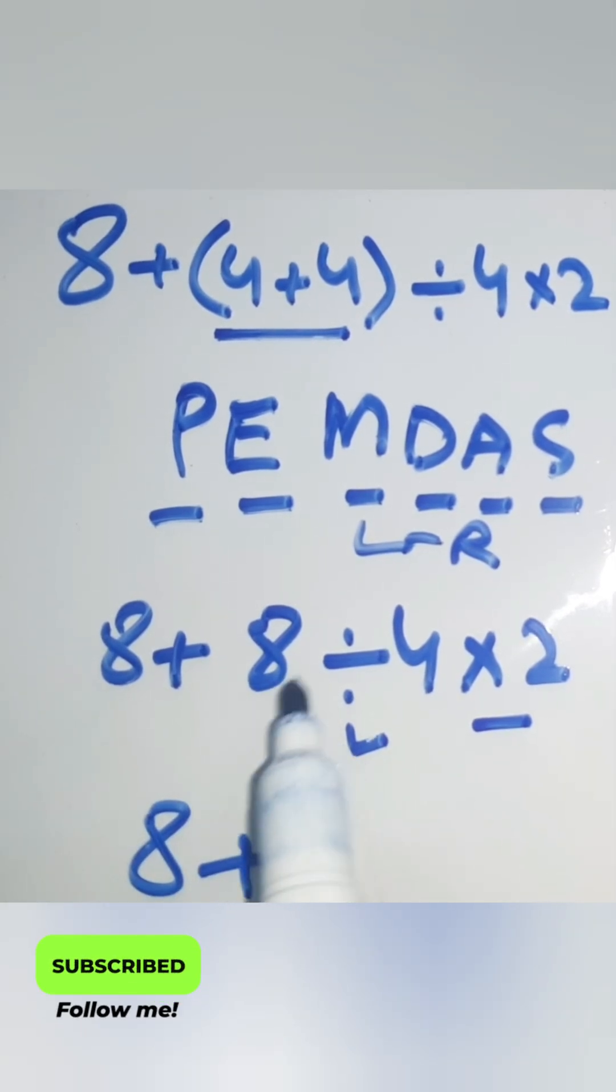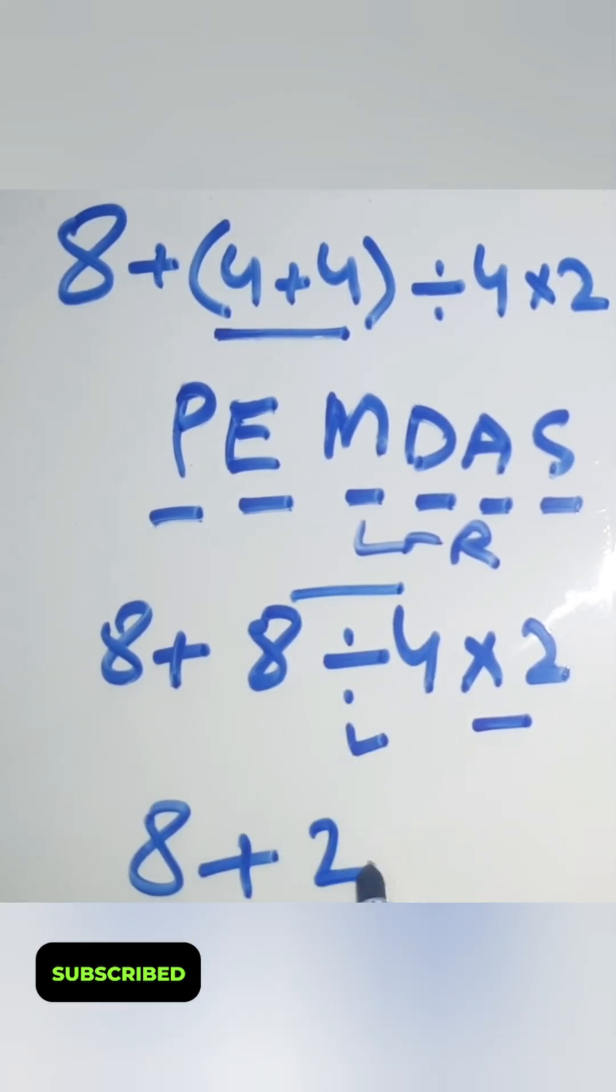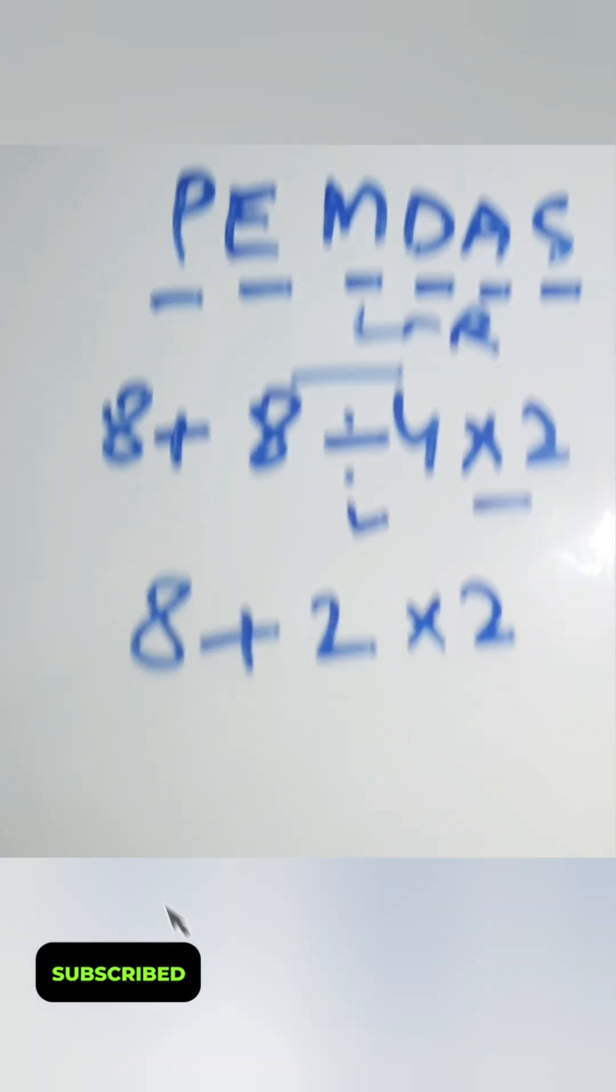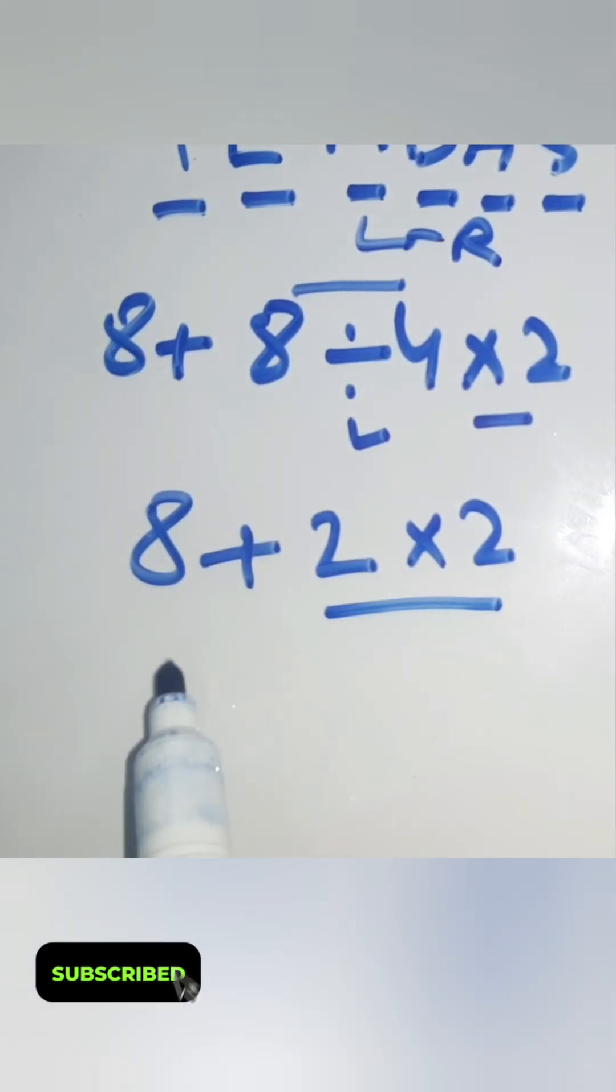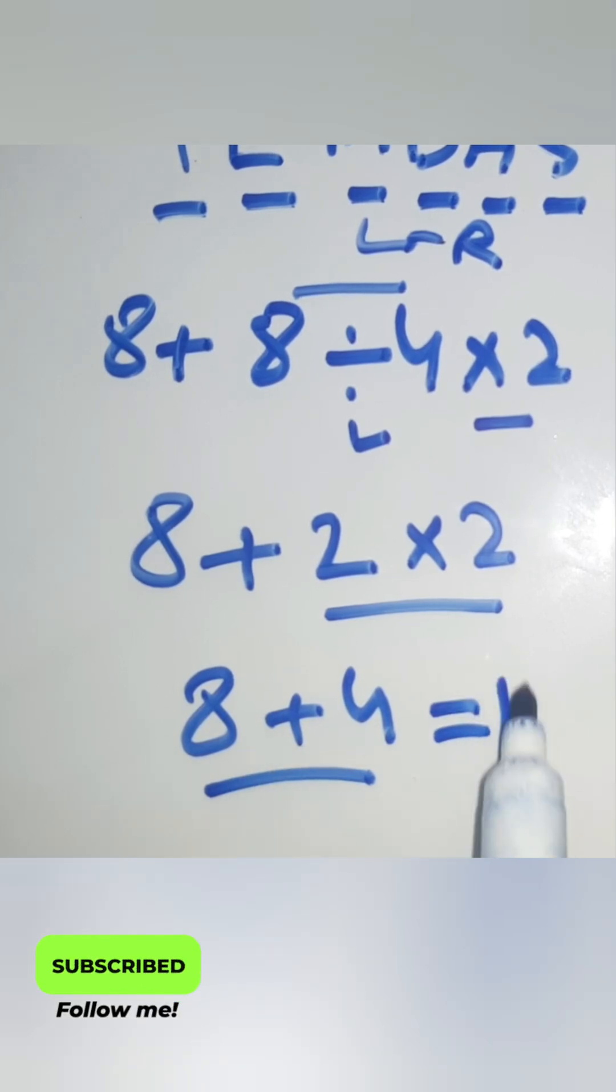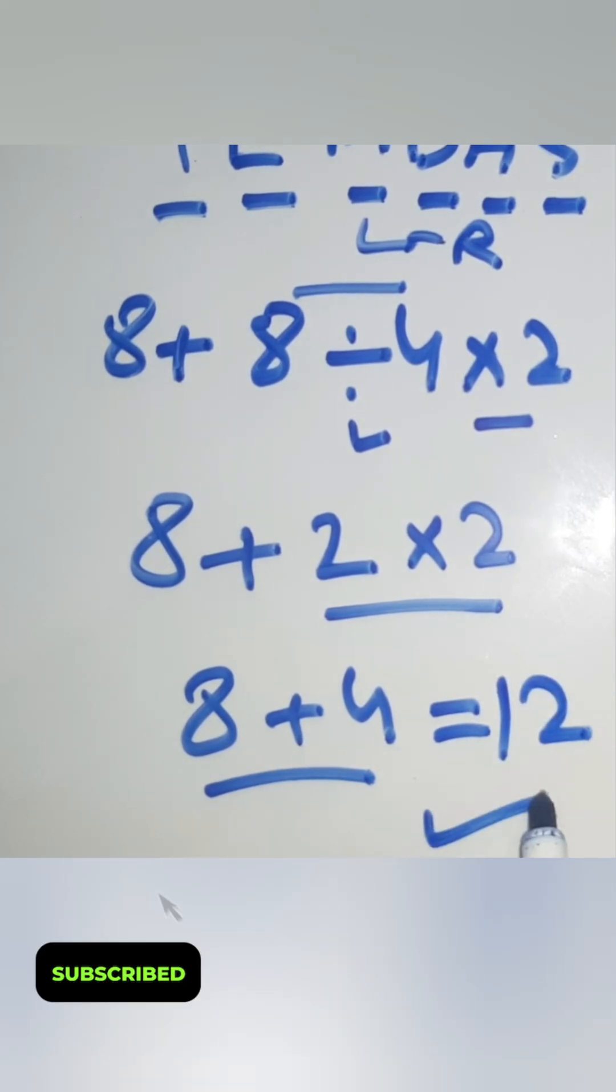8 plus 8 divided 4 gives us 2 times 2. Now here, 2 times 2 gives us 4. And finally, 8 plus 4 gives us 12. This is the right answer.